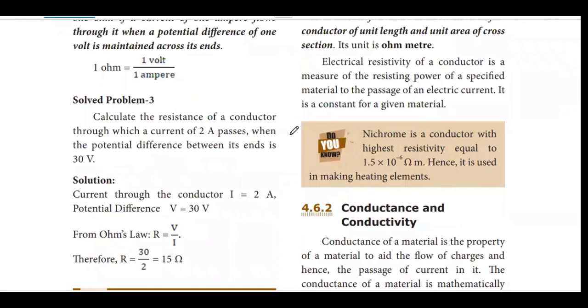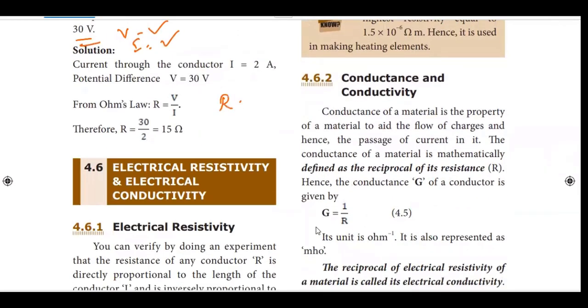Third problem. Calculate the resistance of a conductor through which a current of 2 ampere passes when the potential difference across the ends is 30V. Now we know what values are given. In the form of V, v is equal to ir. V is equal to V by I. V value 30, I value 2.